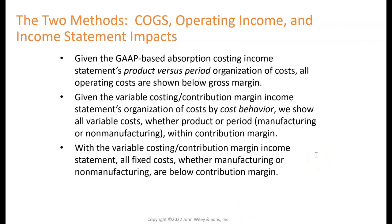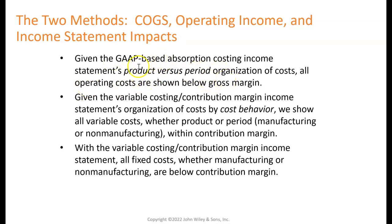The two methods have different impacts on cost of goods sold, operating income, and the income statement. Under a GAAP-based absorption costing income statement, costs are organized as product versus period: product costs are at the top, period costs are below, and all operating costs are shown below gross margin.